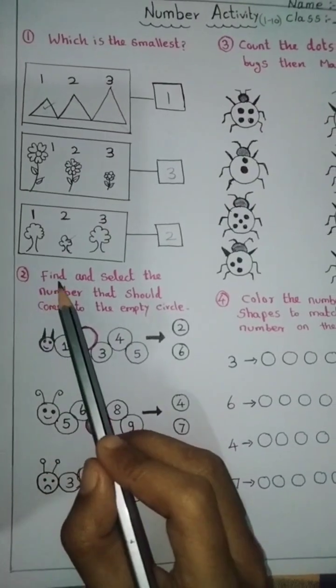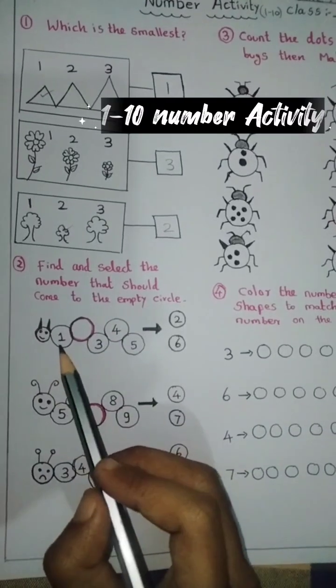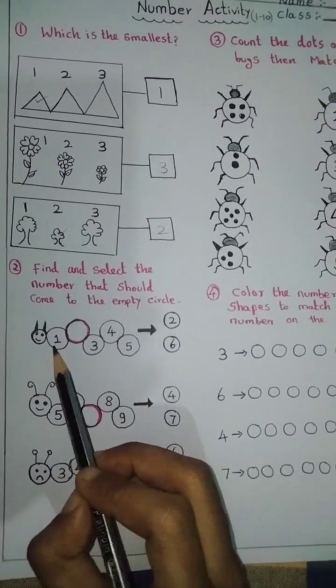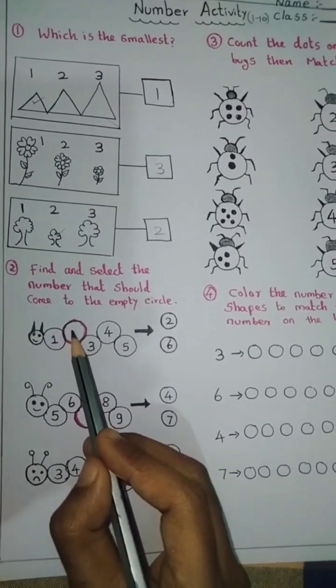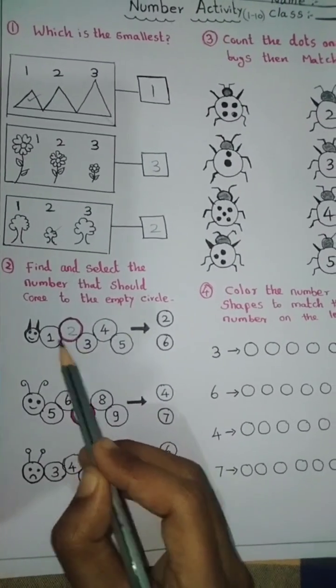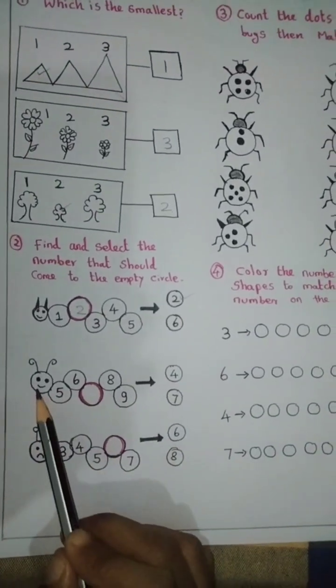Second one, find and select the number that should come to the empty circle. Caterpillar 1, empty space. 1 after comes 2. 1, 2, 3, 4, 5. Answer is 2.